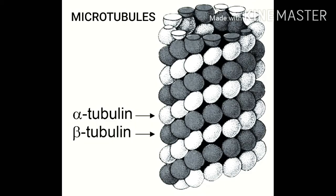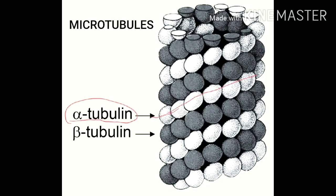The third type of cytoskeletal structure is microtubules. As you can see in the diagram, these microtubules are unbranched hollow tubes. They are made up of tubulin protein — two types of tubulin protein, that is alpha tubulin and beta tubulin.